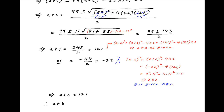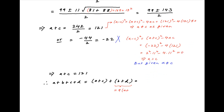Therefore, a plus c equals 121. Now, we are required to evaluate a plus b plus c plus d. This can be rearranged as (a plus c) plus (b plus d). Since b plus d equals 9 times (a plus c), we get a plus b plus c plus d equals 10 times (a plus c) equals 10 times 121, which equals 1210. This is the required answer.